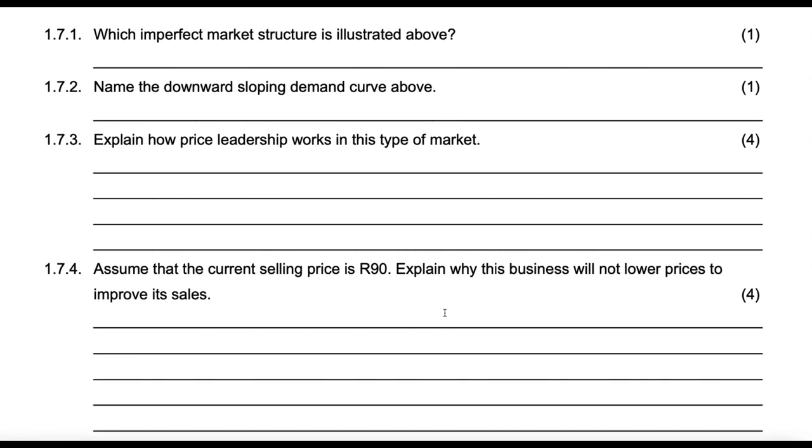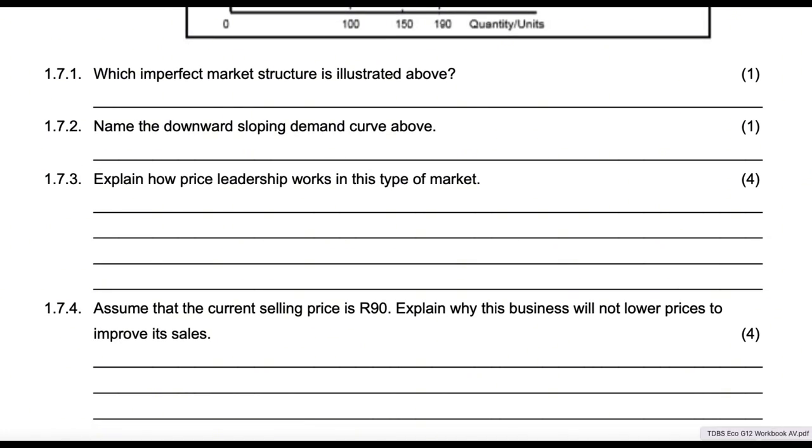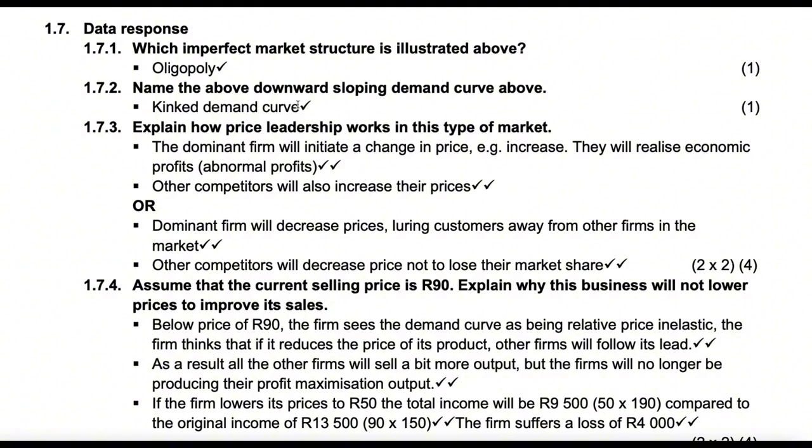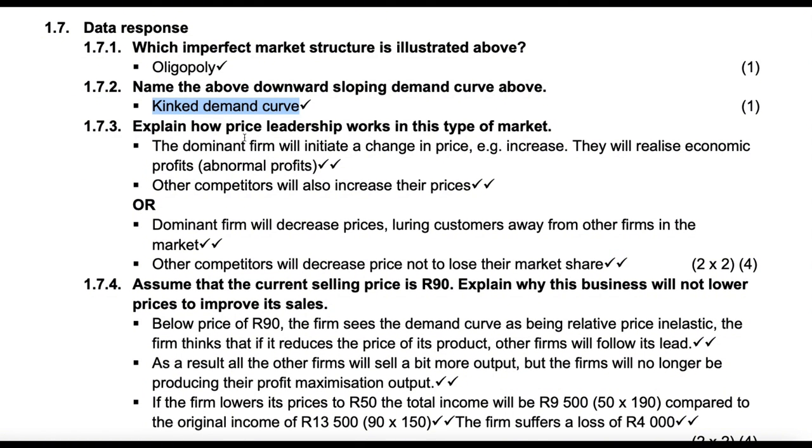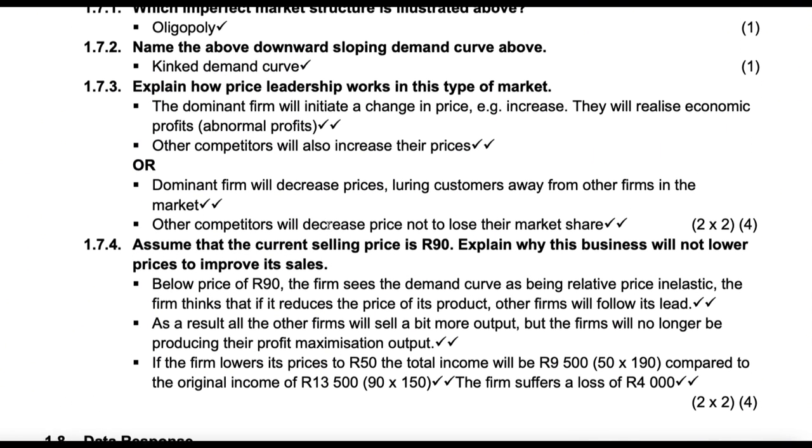But you need to show it using calculations. So what I'm just going to do is go to the answers and show you. So we go to 1.7. Which imperfect market is this? We say it is oligopoly. This demand curve is kinked. And then explain price leadership. I explained using MTN. I said the dominant firm will initiate a change in price, they will realize economic profit. And then other competitors will also increase their prices. Basically, that's that.